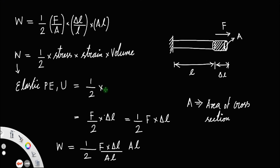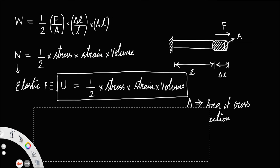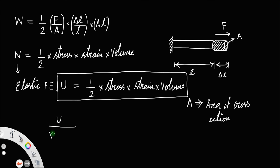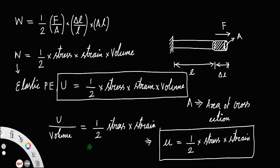So U is equal to half into stress into strain into volume. This is the expression for elastic potential energy due to stretching of a rod. Taking volume to the left side, U by volume equals half times stress into strain. This term — elastic potential energy per unit volume — is represented as small u, where small u equals half into stress into strain.